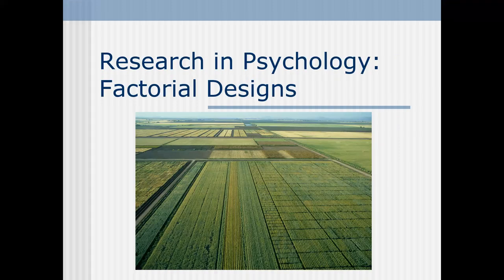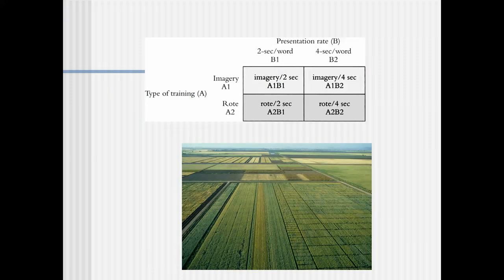Welcome, everybody. This is a mini-lecture on factorial designs. Take a look at that picture — nice fields carved out in little blocks. That's where some of the notation and many of the ideas for factorial design came from: agricultural research, where they would test one factor being seed type, another factor being fertilizer type, and they would carve up the field into blocks.